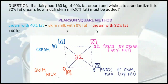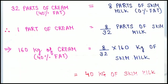To find the amount of skim milk for 160 kg of cream, we use the unitary method: 32 kg of cream requires 8 kg of skim milk. So 1 kg of cream requires 8/32 kg of skim milk, and thus 160 kg of cream requires 40 kg of skim milk. So 40 kg of 0% fat skim milk must be mixed into 160 kg of 40% fat cream to get cream with 32% fat.